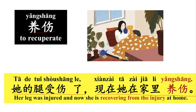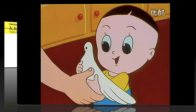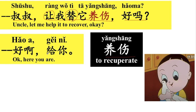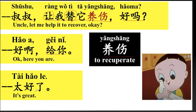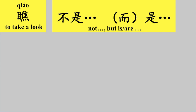她的腿受伤了，现在她在家里养伤。好，那受伤是get injured，养伤，recover from the injury. 让我替他养伤好吗？好啊，给你。给你就是give it to you. 太好了，that's great.